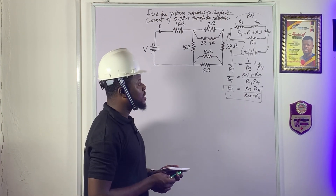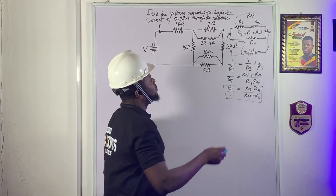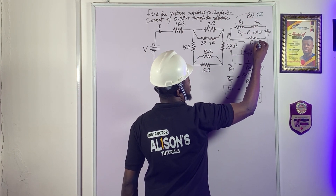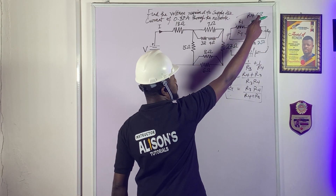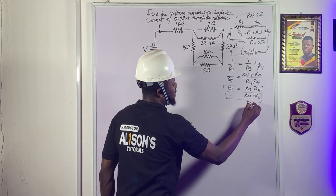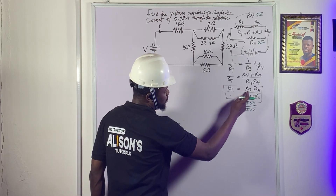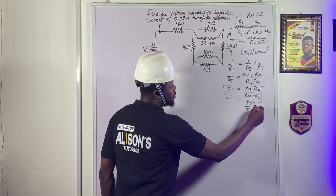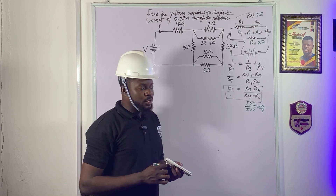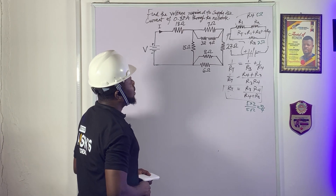Sometimes when I say a resistor is in parallel with another, if one is 5 ohms and the other is 2 ohms, you may just see me write: (5 × 2) / (5 + 2), which gives 10/7. That's the shorthand — just multiplying and adding. I won't always write out the full formula, but it's here to guide you. Now let's go straight to analyzing the circuit.